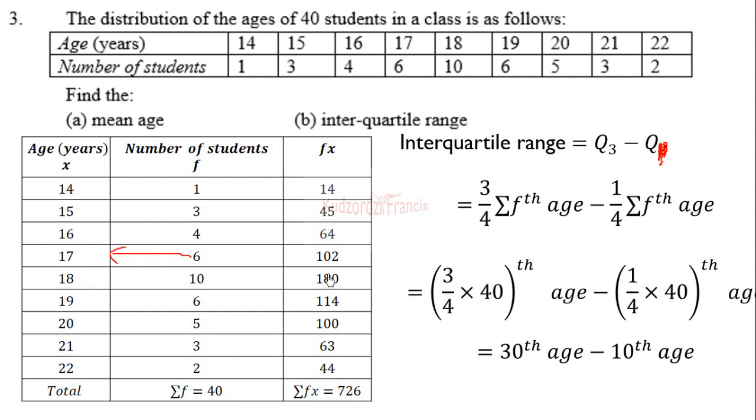Then also, you add cumulatively until you get the 30th age. So we have 14 here, so that is 1 + 3 + 4 + 6 is 14, + 10 that will be 24, + 6 that will be 30. So the 30th age corresponds to 19.